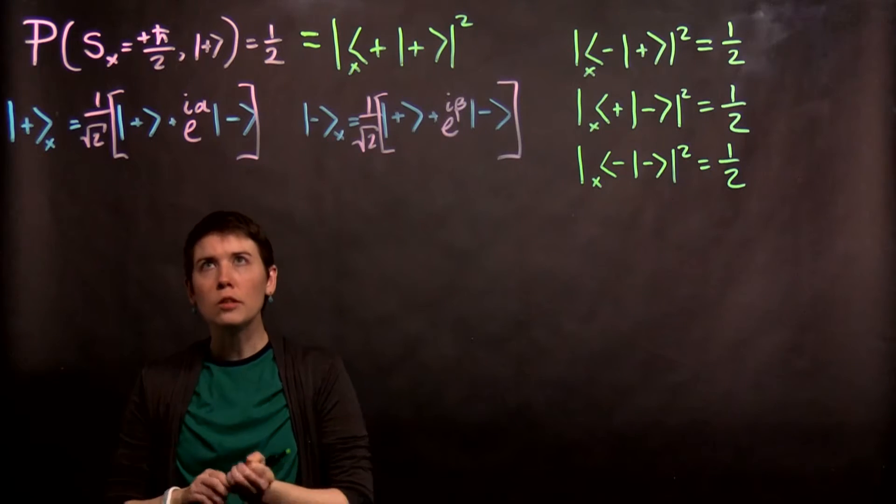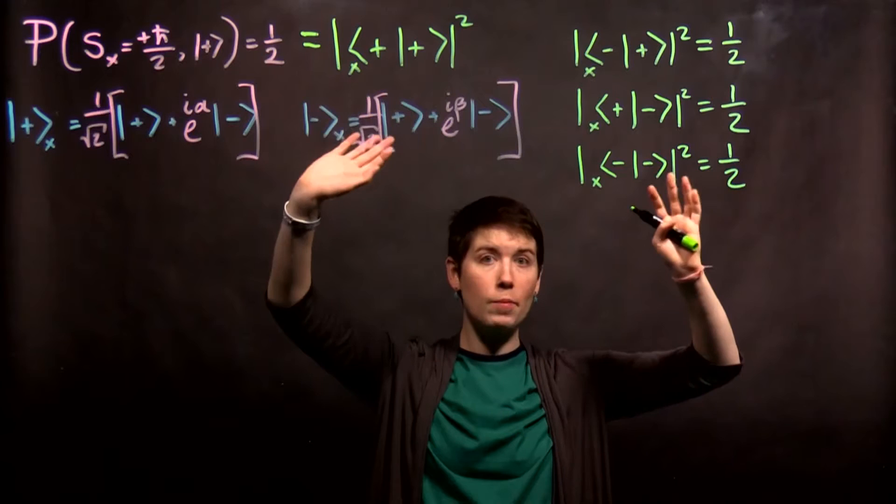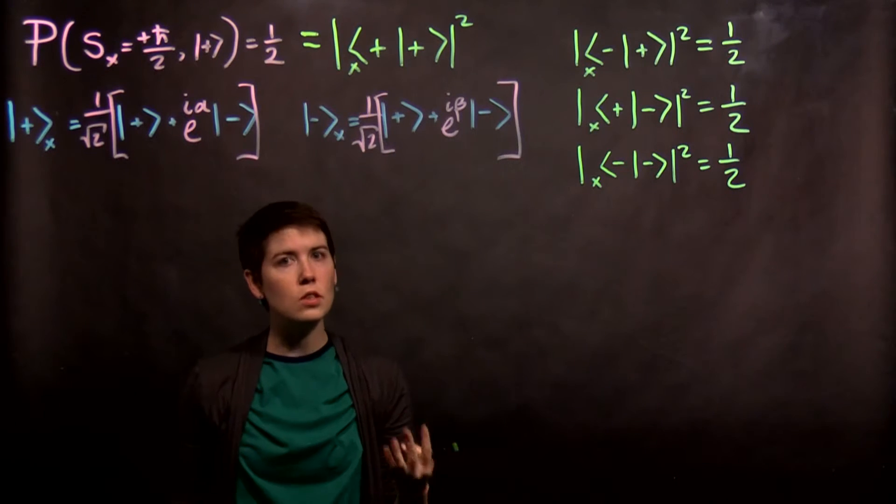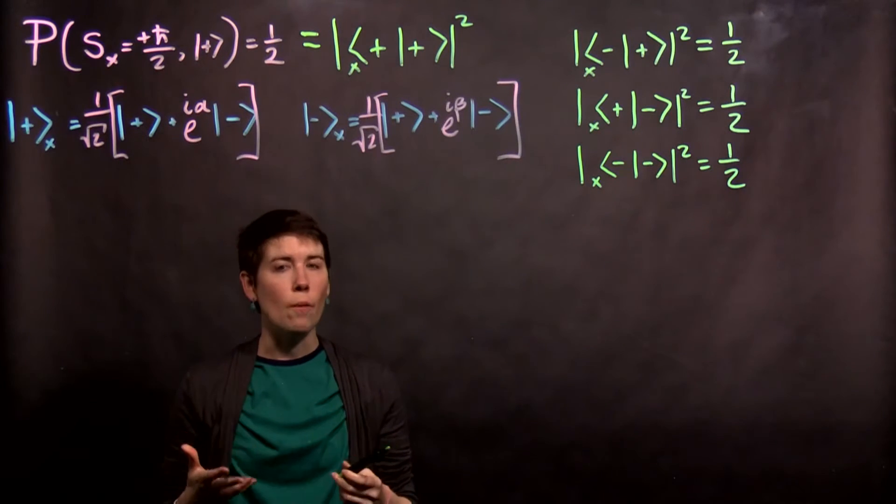Here we have used all of this information. We have used our experimental measurements to get this far, and we still have these unknown variables. So what do we do now?